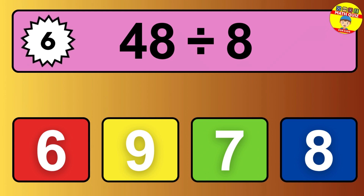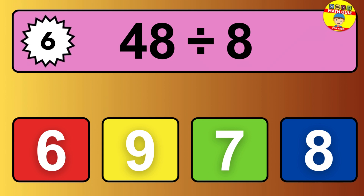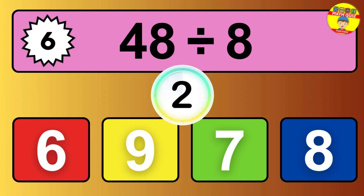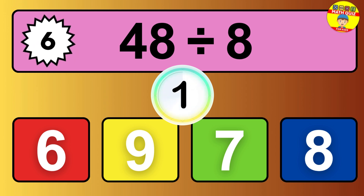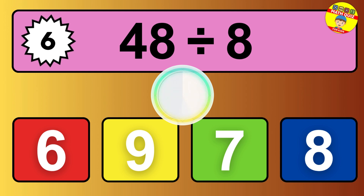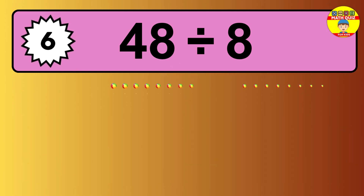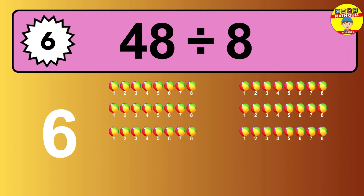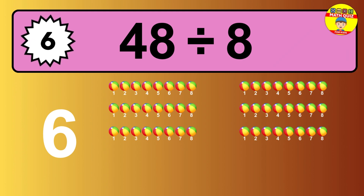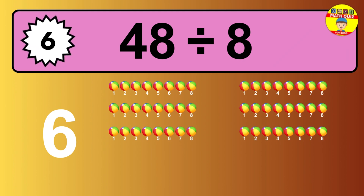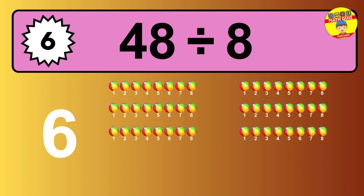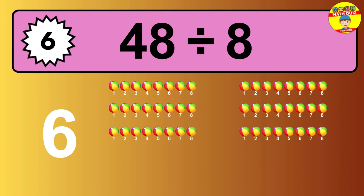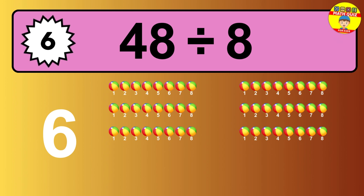48 divided by 8 — time to think. Let's go to the solution. Divide the number 48 by 8. Each group contains 8 units, so dividing 48 by 8 results in 6 equal groups. Thus, the result is 48 divided by 8 equals 6.